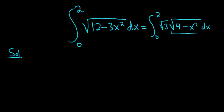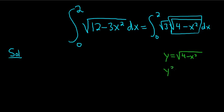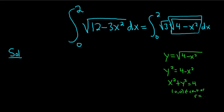And this here looks somewhat familiar. Let's think about what this actually means graphically. So if we call it y, so y is equal to the square root of 4 minus x squared, and then we square both sides. We get y squared equals 4 minus x squared. Add the x squared to the other side, and so we get x squared plus y squared equals 4. So this is a circle with center 0, 0.